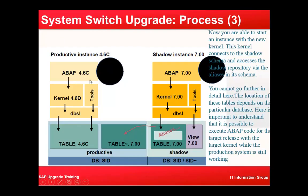Now in this screen, you can see the system switch upgrade process. The new kernel is now in place; this kernel connects to the shadow schema and accesses the shadow repository via the aliases in its system. These tables are connected to the shadow schema or shadow tables, getting data from these aliases and views. The location of these tables depends on the particular database, and database names follow the naming convention.